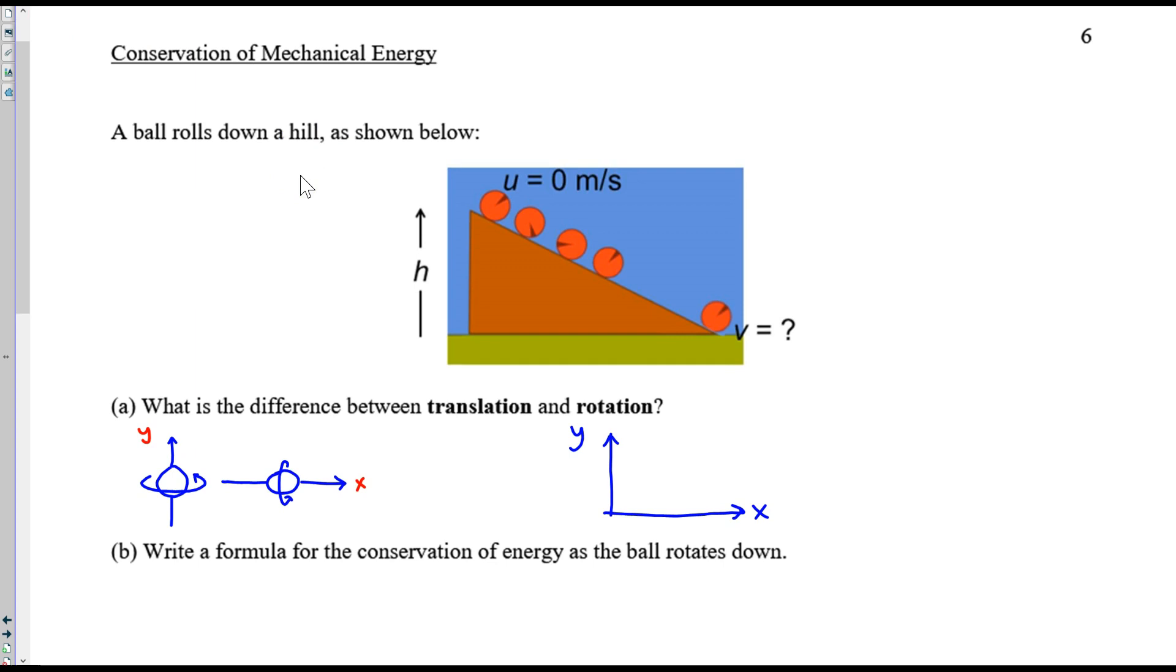That's a method we'll see coming in the future. Okay, now on to page six. Translation and rotation are different. Rotation is spinning around an axis, but translation would be movement, like along the x-axis or movement along the y-axis, or maybe you do both at the same time. So when a ball rolls down a hill, right here, you have translation and rotation.